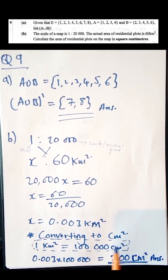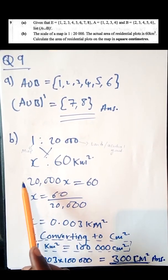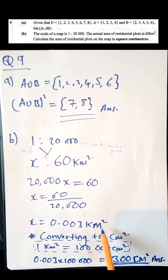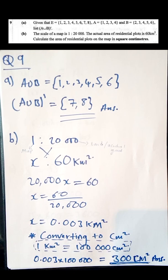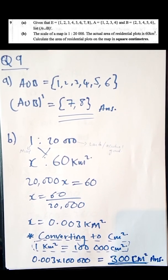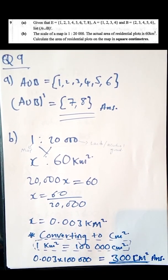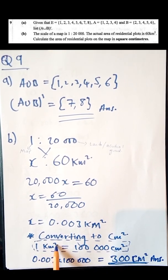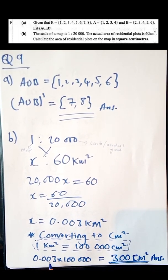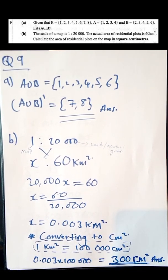You simply cross-multiply: 20,000 × x = 60 × 1. Solving for x gives x = 60 ÷ 20,000 = 0.003 km². This is in kilometers squared, but the question asks for square centimeters. Since 1 km² = 100,000 cm², multiplying 0.003 by 100,000 gives 300 cm² as the final answer.